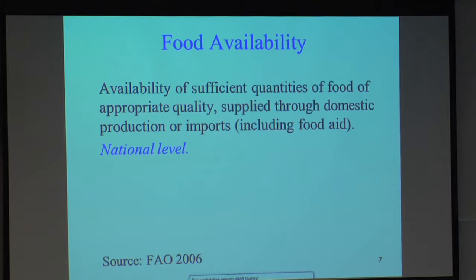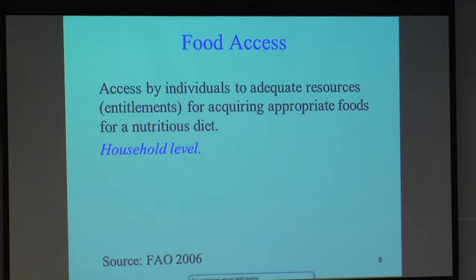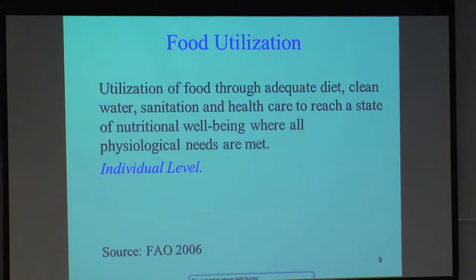Availability — adequate quantities of food are available, including food aid — is normally measured at the national level. Food access, measured at the household level, means you have enough resources to access food, whether food you're growing yourself or income to purchase food. Food utilization is the physiological process — through adequate diet, clean water, sanitation, and health care — to reach a state of nutritional well-being. It's generally measured at the individual level, for example whether a child is well-nourished or whether a woman is anemic.